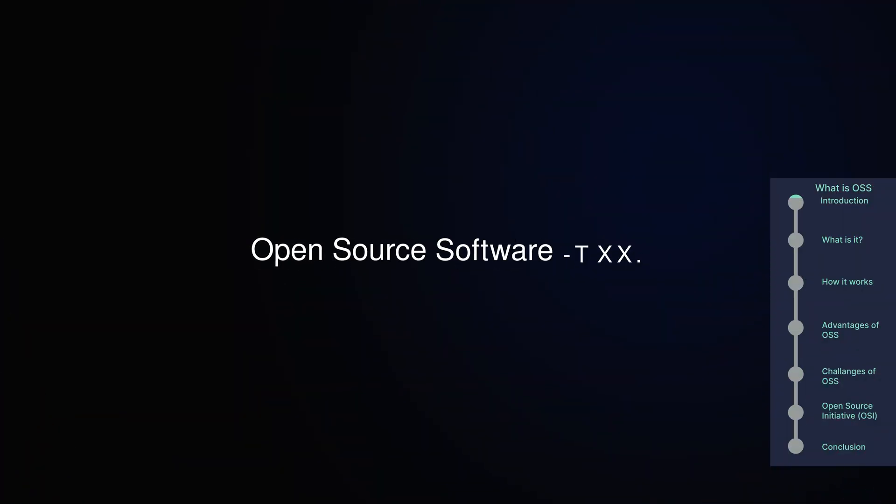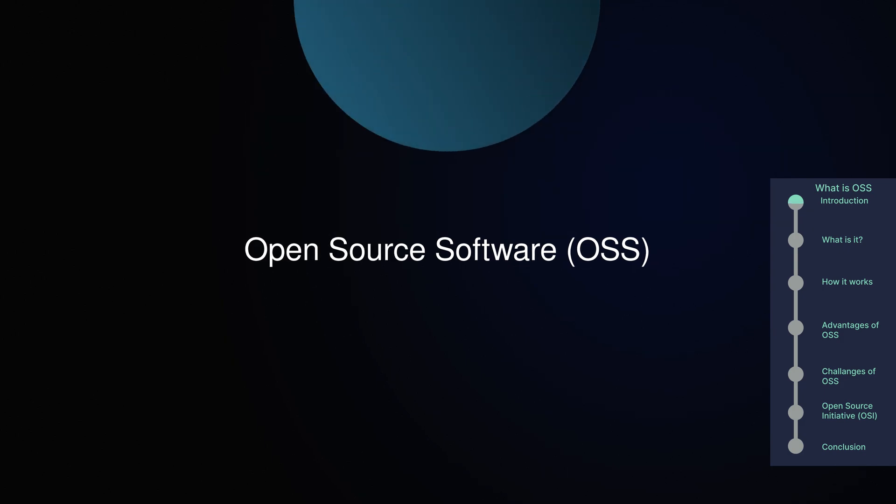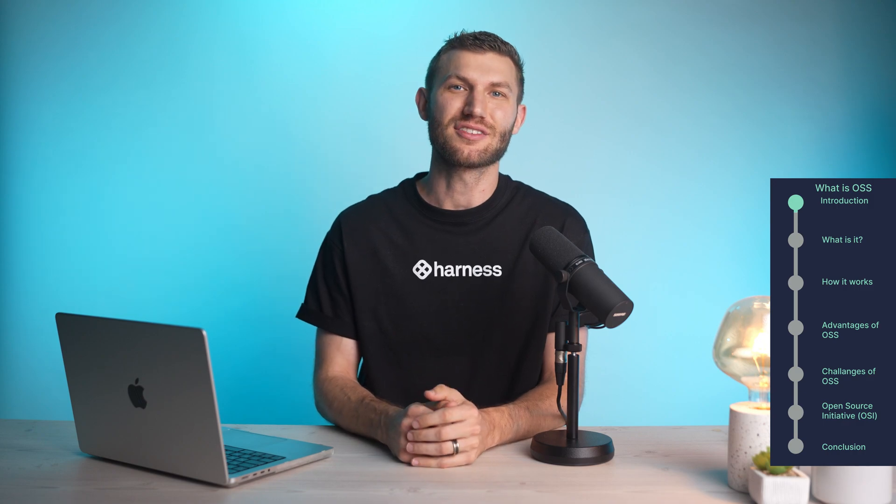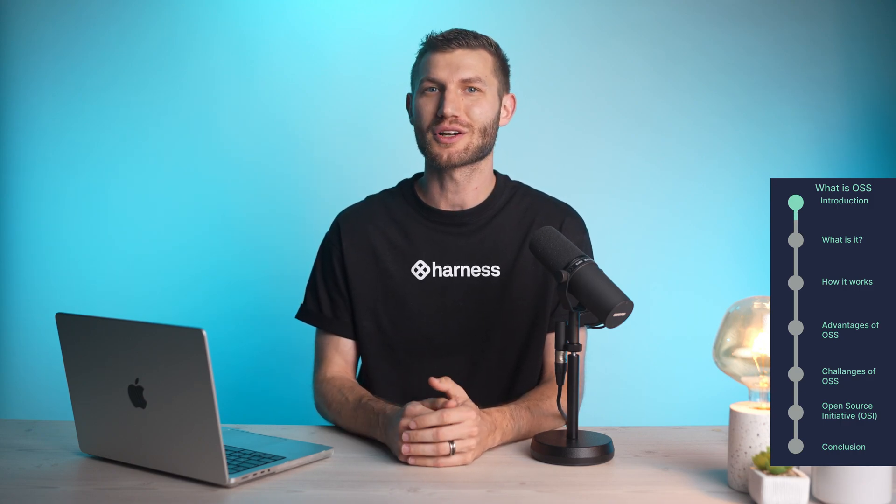Today, we're diving into Open Source Software, or OSS. We'll explore how publicly available source code can be freely used, modified, and shared, and discuss the benefits like open collaboration, flexibility, lower cost, and community support, along with some challenges like managing dependencies and licenses.